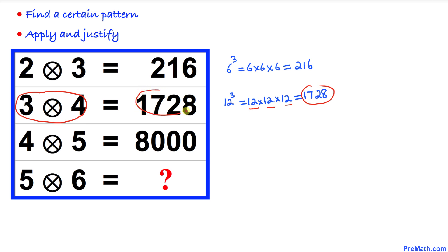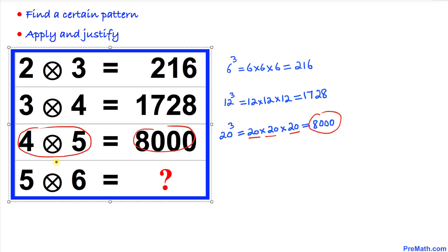Now let's focus on the next numbers: 4 and 5. 4 times 5 is 20, and now we're going to take the cube of 20, that means we multiply 20 three times, and you can see we got 8000.